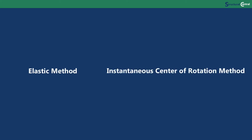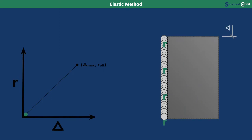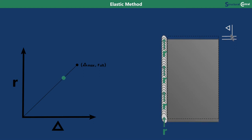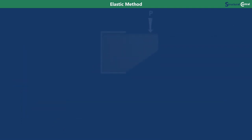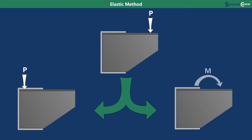There are two methods for determining the stress in the weld: the elastic method and the instantaneous center of rotation method. I'm going to show you how to do both methods. First, we'll start with the elastic method. The elastic method works by assuming the weld behaves linear elastically, which means that the stress in the weld is proportional to its deformation. This linear relationship makes it possible to use the principle of superposition to determine the stress. This allows you to split up the eccentric load into a concentric load and a concentrated moment. You can then determine the stress for these loads using simple formulas and then add the stresses together.